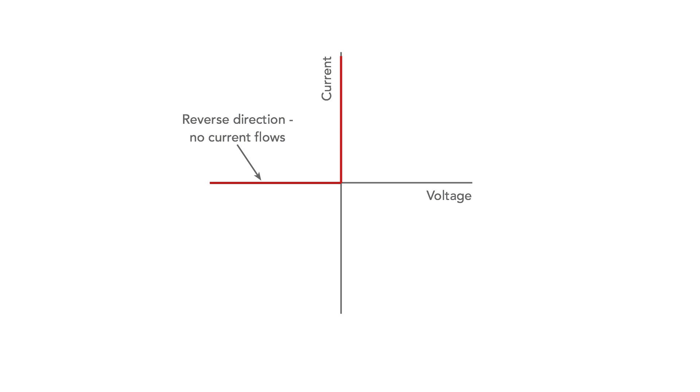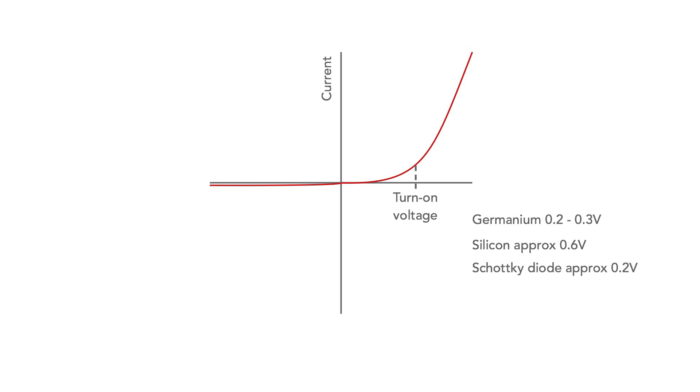In reality, the actual characteristic is more like this: a very small amount of current flows in the reverse direction, and in the forward direction it takes a certain voltage for the diode to turn on properly. This turn on or knee voltage is between 0.2 and 0.3 volts for germanium, about 0.5 or 0.6 volts for a silicon diode, and around 0.2 to 0.3 volts for a Schottky diode.